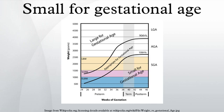Related definitions include very low birth weight (VLBW), which is less than 1,500 grams, and extremely low birth weight (ELBW), which is less than 1,000 grams. Normal weight at term delivery is 2,500 to 4,200 grams. SGA is not a synonym of LBW, VLBW, or ELBW.